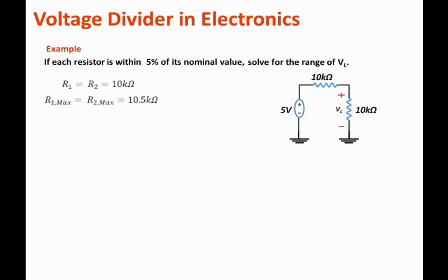So the maximum resistor value that we can have will be 10.5k. The minimum value for R1 is the same as the minimum value for R2, which is 9.5k ohms. That is basically 10 kilo ohms minus 5 percent.